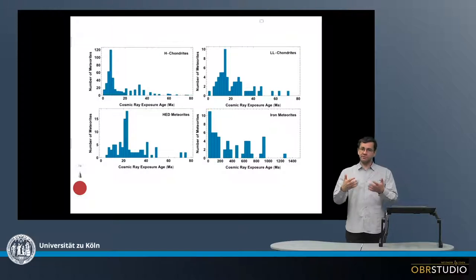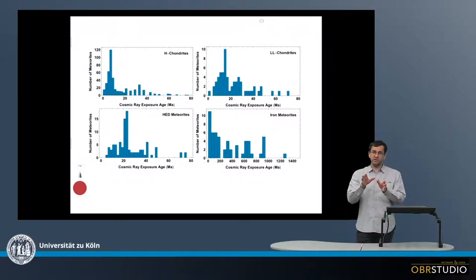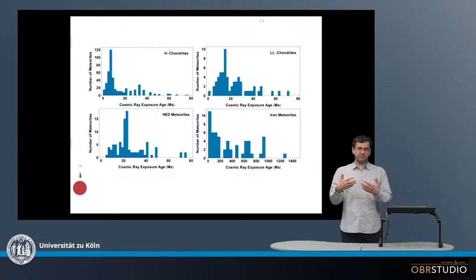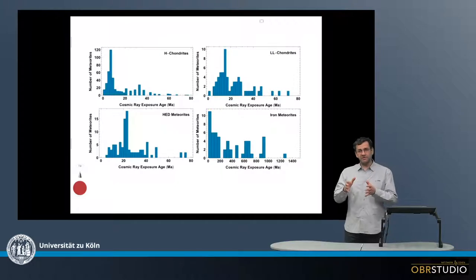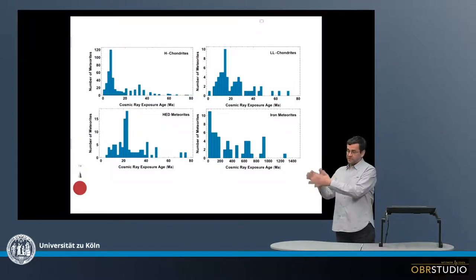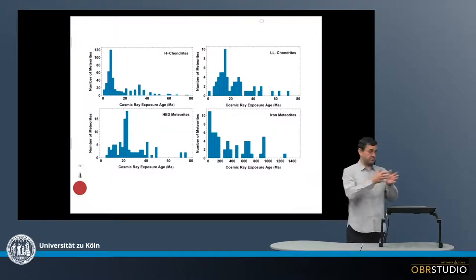These cosmic rays then produce various new isotopes, cosmogenic isotopes, within the meteoroid. Then this meteoroid lands on Earth, and we can use these newly produced radioactive isotopes to determine the age it took the meteoroid to travel from the source planetary body to Earth.